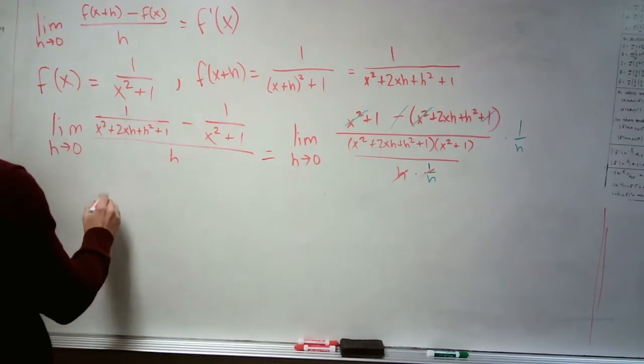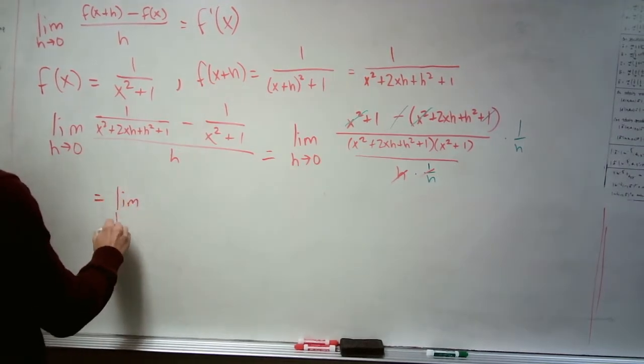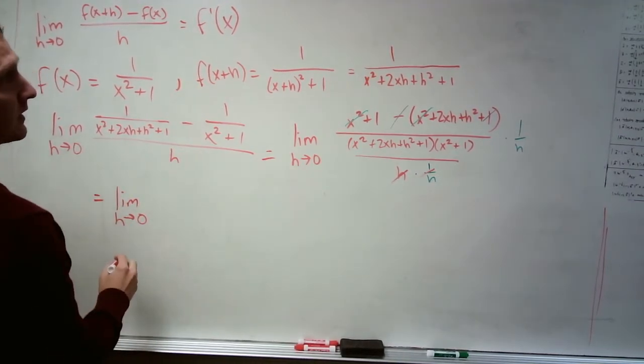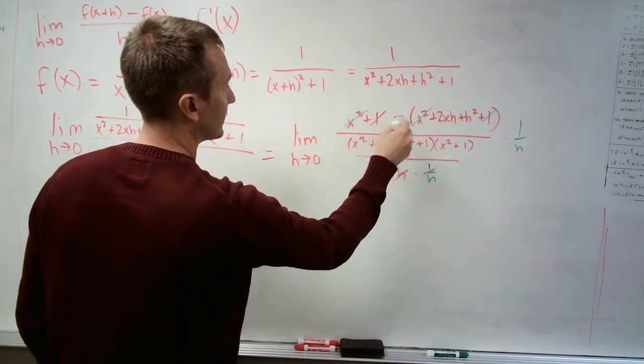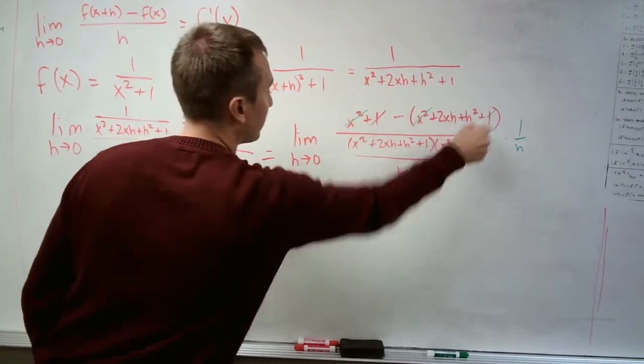So here's this. And this now equals the limit as h goes to zero of what's left over. I didn't cancel this out, canceled out the negative sign, forgive me, 1 minus 1.